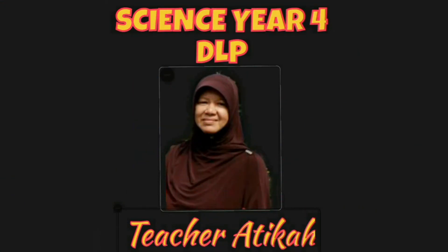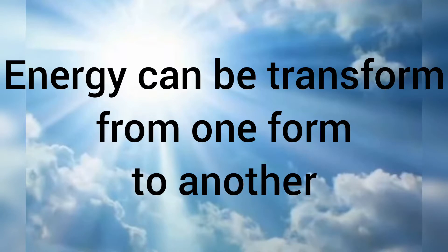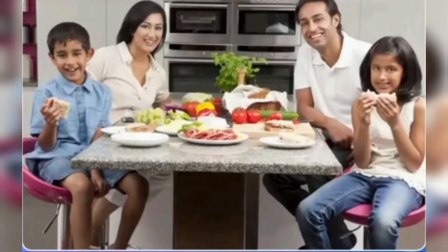Our lesson today is about transformation of energy. Energy can be transformed from one form to another. The symbol arrow means 'change to' or 'transform to', and the symbol plus means 'and'. For example, potential energy transforms to kinetic energy.